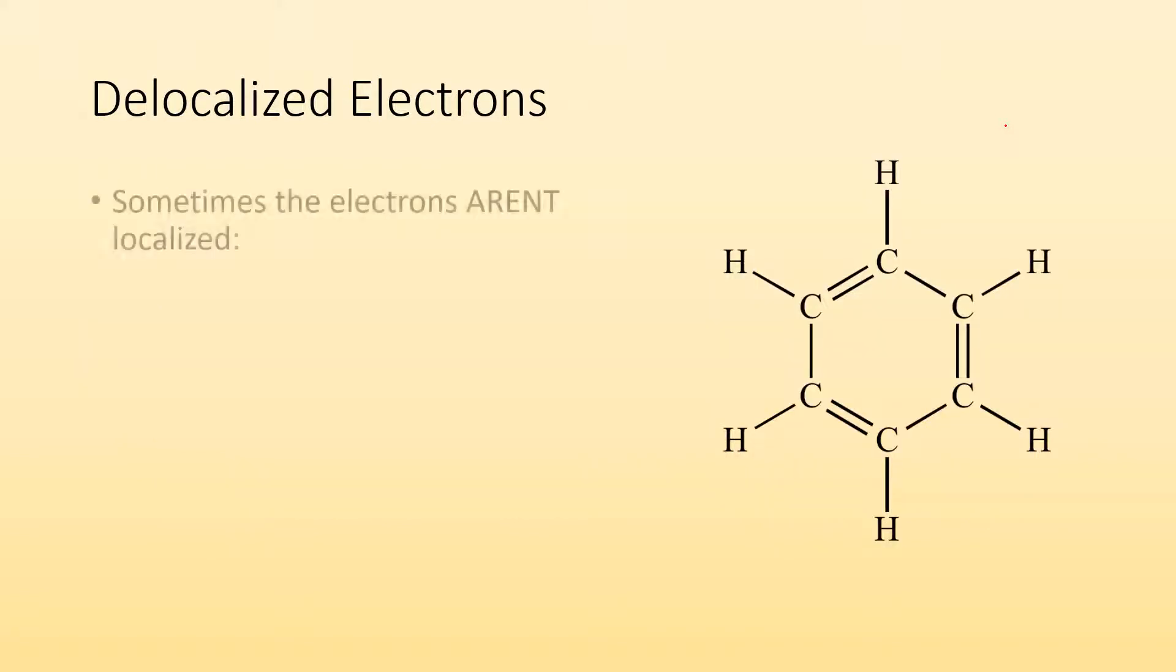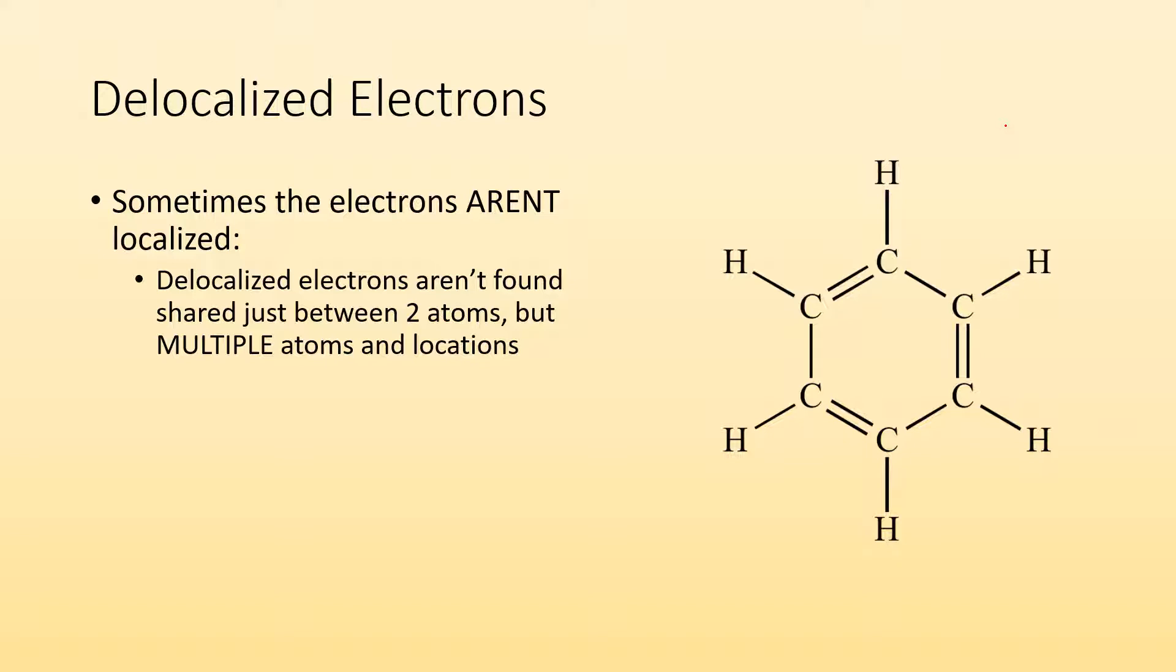Delocalized electrons are the opposite. Sometimes electrons aren't localized. Delocalized electrons aren't found shared just between two atoms, but between multiple atoms and locations. So when does this occur?